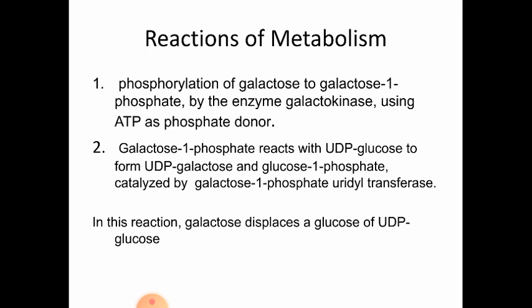In the next step, galactose-1-phosphate reacts with UDP glucose to form UDP galactose and glucose-1-phosphate. This is catalyzed by the enzyme galactose-1-phosphate uridyl transferase. In this reaction, galactose displaces the glucose of UDP glucose.